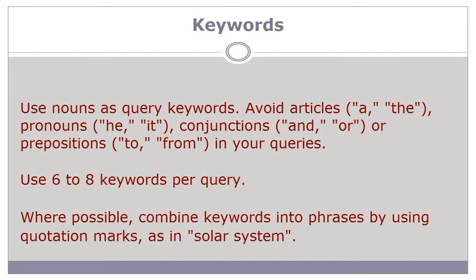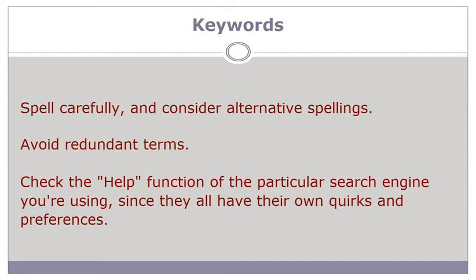Here are a few tips to find effective keywords for your search: Use nouns as query keywords. Avoid articles like 'a' and 'the', pronouns like 'he' and 'it', conjunctions like 'and' and 'or', or prepositions like 'to' and 'from' in your queries. Use 6 to 8 keywords per query. Where possible, combine keywords into phrases by using quotation marks, as in 'solar system'. Spell carefully and consider alternative spellings. Avoid redundant terms. Check the help function of the particular search engine you are using, since they all have their own quirks and preferences.